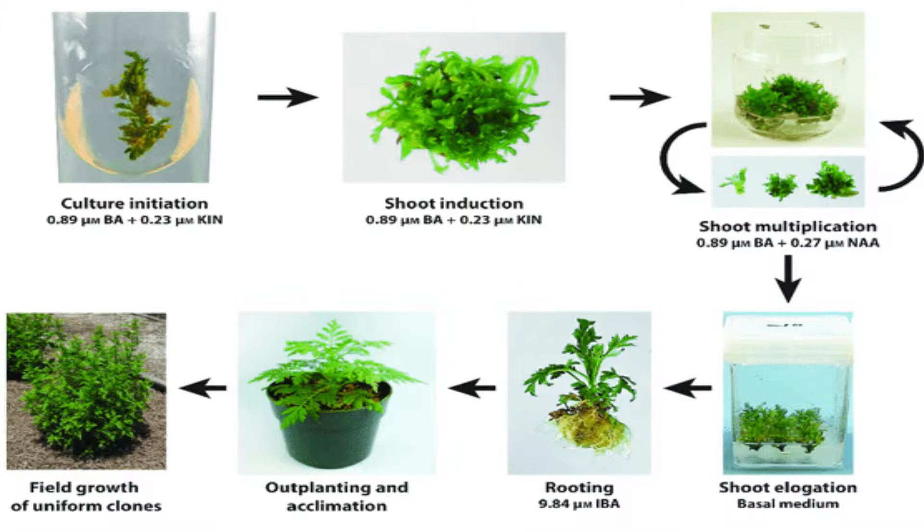The mother plant should be healthy and disease resistant. Then, step two, prepare the culture medium. Then transfer to a natural environment or field level — that means whenever the plant is healthy and strong enough, it can be moved to a natural environment.